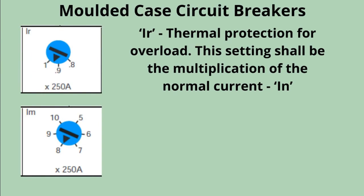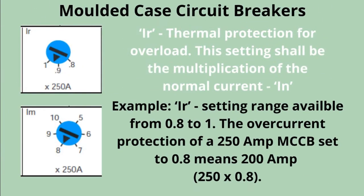IR is the thermal protection setting for overload. This shall be a multiplication of the normal current. For example, the IR setting range is available from 0.8 to 1. The overcurrent protection of a 250 amp MCCB set to 0.8 means 200 amp — that is 250 multiplied by 0.8.